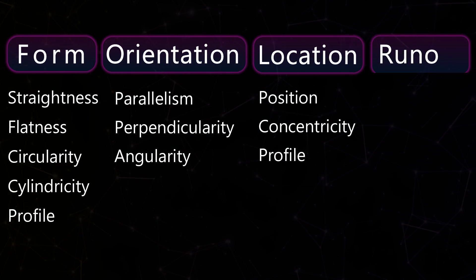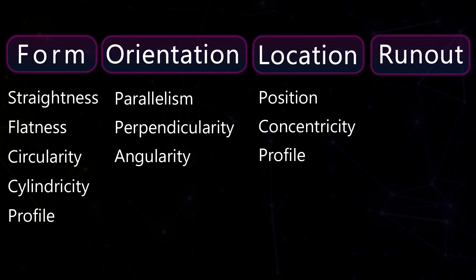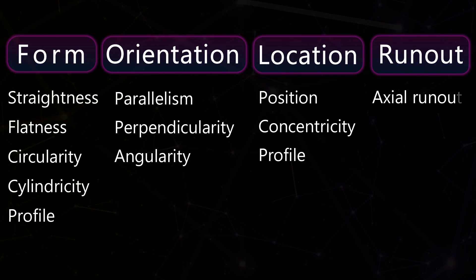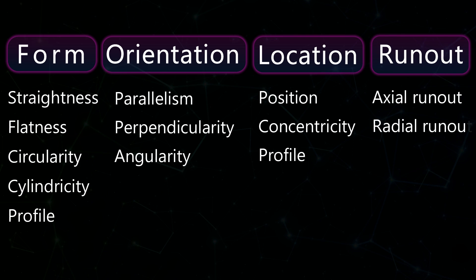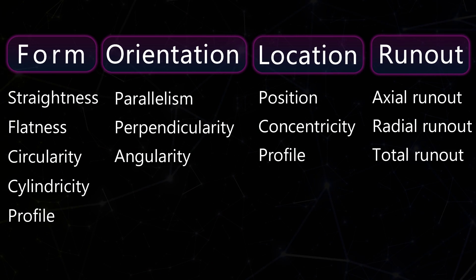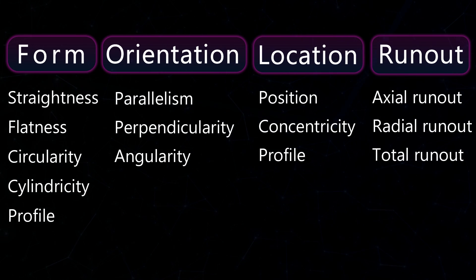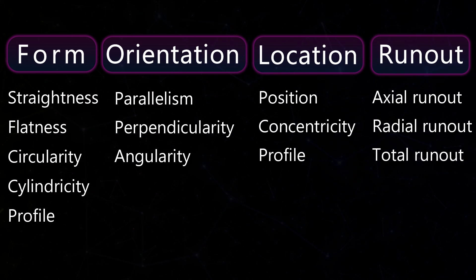Runout tolerances, which are mainly used to tolerate rotating elements. These are kind of combined specifications that combine other specs like circularity, straightness, cylindricity and concentricity in one tolerance.